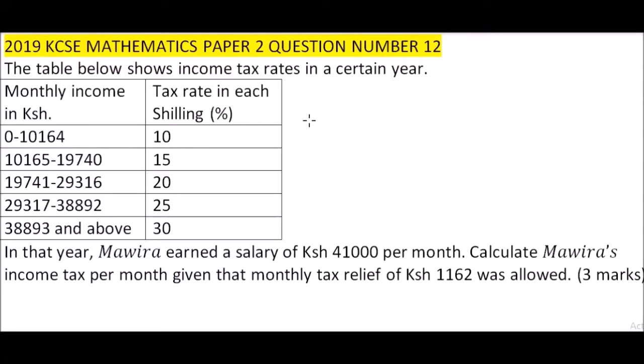At 2019 paper 2, question number 12. We are told the table shows income tax rates in a certain year. Monthly income in Kenyan shillings and tax rate in percent. From zero to 10,164 you pay at the rate of 10 percent; 10,165 to 19,740 at 15 percent; up to 38,893 and above you pay at the rate of 30 percent. Mavera earned a salary of 41,000 Kenyan shillings per month. Calculate Mavera's income tax per month, given that monthly tax relief is 1,162 shillings.